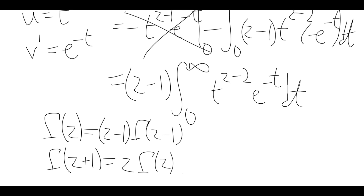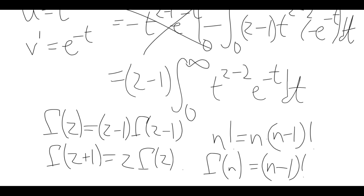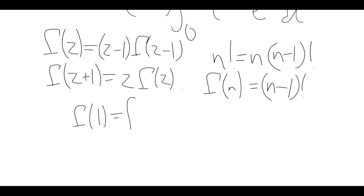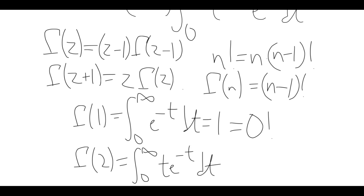A function that also satisfies this is the factorial function — almost. If we take n minus 1 factorial and multiply by n, we get n factorial. So for positive integers, gamma of n ends up being n minus 1 factorial. We can check, for example, that gamma of 1 is the integral of e to the minus t, and that's 1, which is 0 factorial. And gamma of 2 is the integral of t e to the minus t from 0 to infinity, and that's also 1, which is 1 factorial. The pattern continues from this identity.